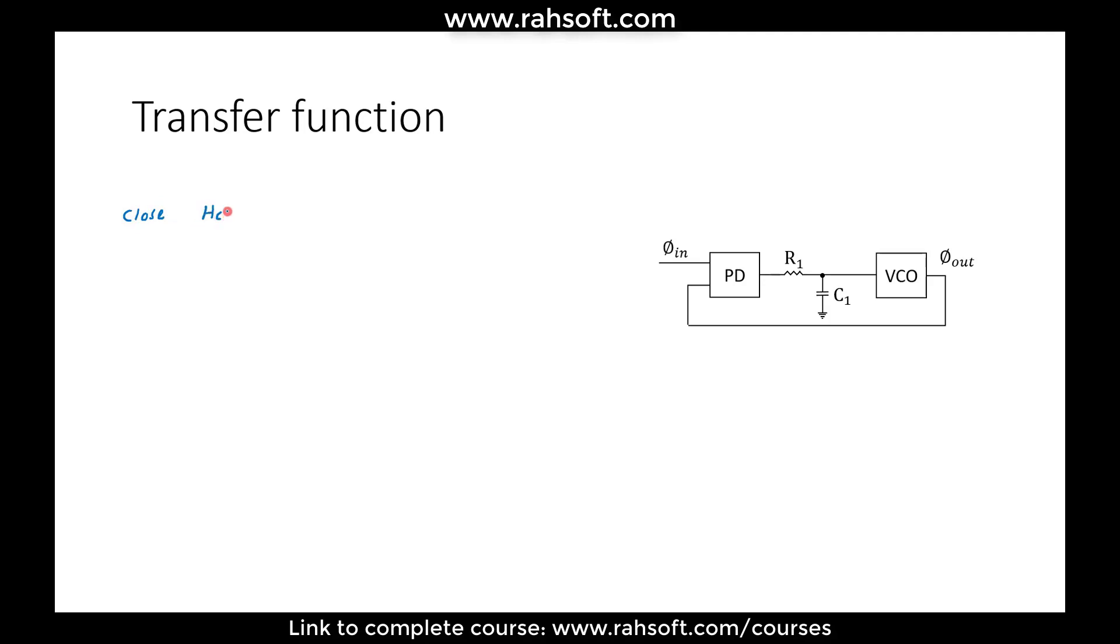Because you know that for a closed loop, you can just write H close is equal to H open, I'm going to write with O, over 1 plus H O, because I have unity feedback. So knowing the open loop transfer function is enough for me. So what I do is just I can cut it from here and assume that this input is u.